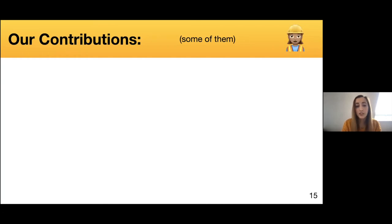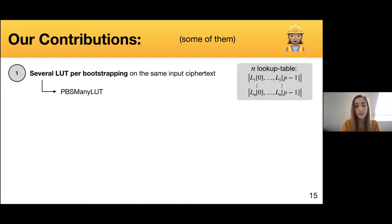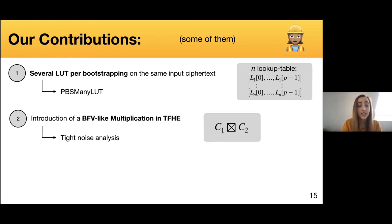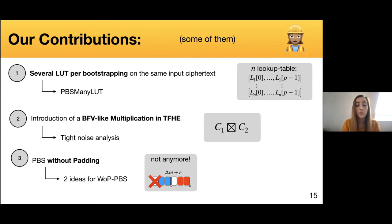In the rest of the presentation, you're going to see our contributions. We're going to start with what we call PBS ManyLoots, a technique allowing us to evaluate several lookup tables per bootstrapping on the same input. Then we'll see how to use the BFV-like multiplication in TFHE to improve techniques, made possible thanks to a tight noise analysis. And finally, we'll see what we call WoPBS — a PBS without bit of padding — which overcomes the limitation about the most significant bit.